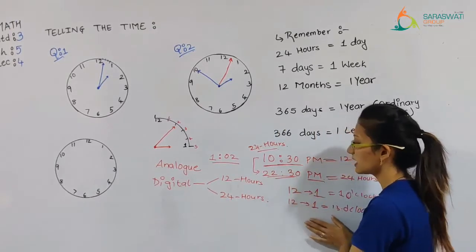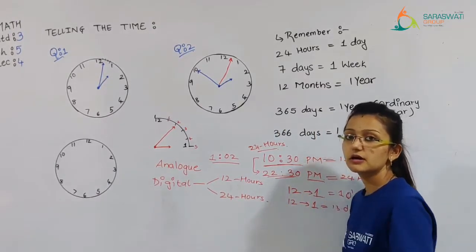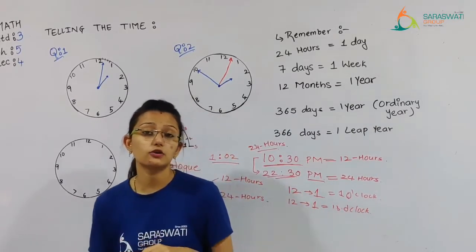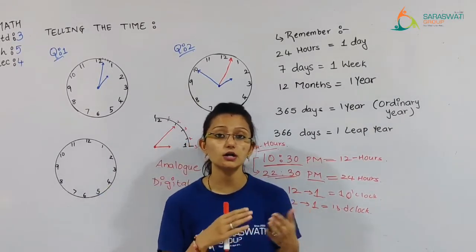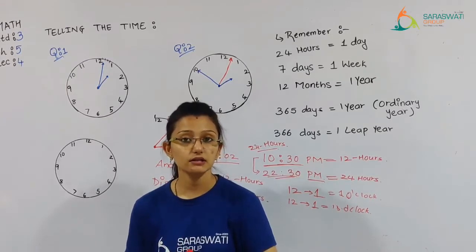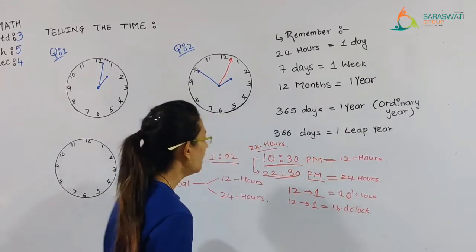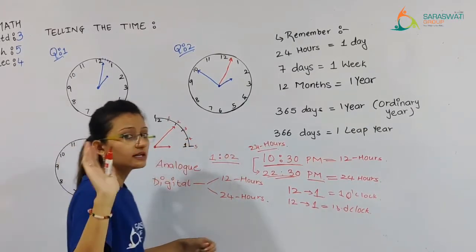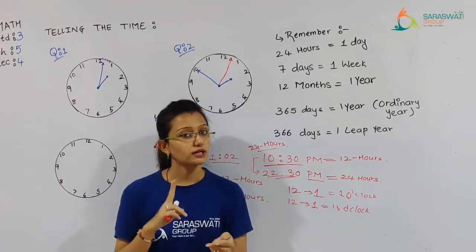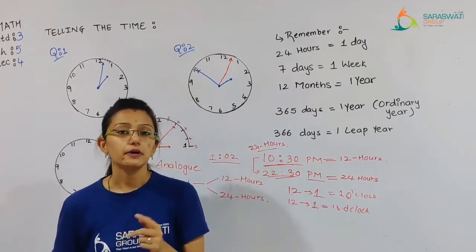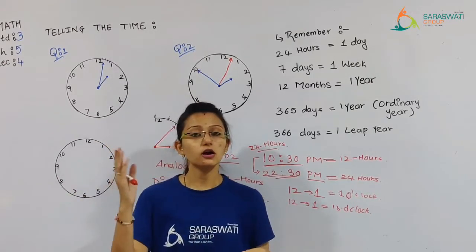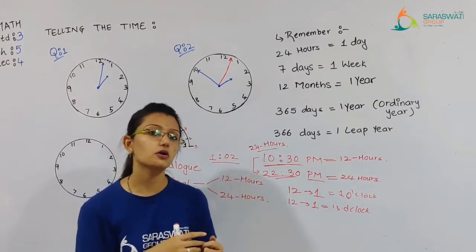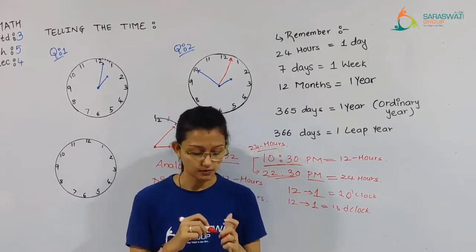So 12-hour and 24-hour timings work differently. For example, if your mobile phone shows 21, 22, 23 — that is 24-hour format. But if it shows 5 o'clock, 6 o'clock, 7 o'clock — then it is 12-hour timing. I hope you all have understood this.